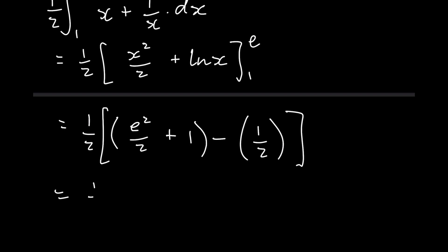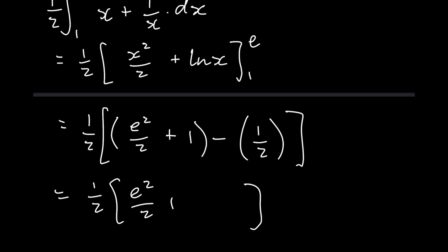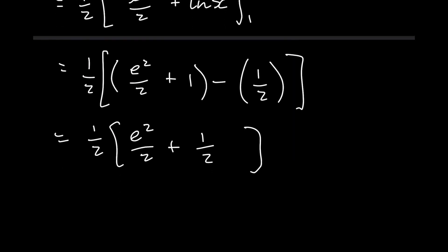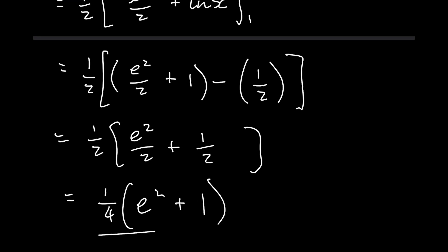So now, taking this further, we have 1 over 2 times (e² over 2 plus 1 minus 1 over 2). And that becomes plus 1 over 2. Then we take out this 1 over 2 — 1 over 2 times 1 over 2 is 1 over 4. So we get 1 over 4 times (e² + 1). And that's the final arc length of this function.